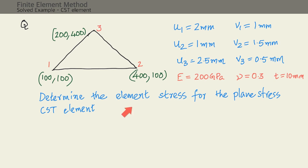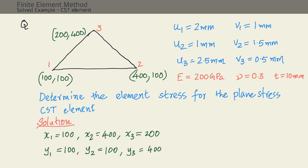Let's solve a problem to determine the element stress for a plane stress CST element. The x and y coordinates at nodes 1, 2, and 3 are given. x1 = 100, x2 = 400, x3 = 200, y1 = 100, y2 = 100, and y3 = 400.